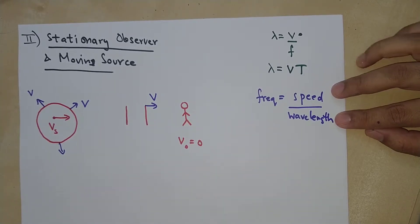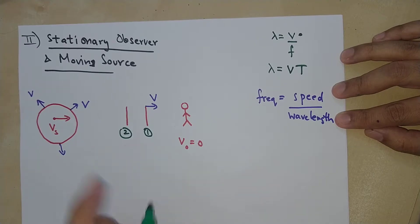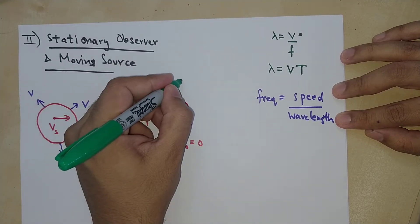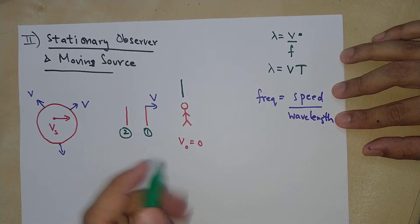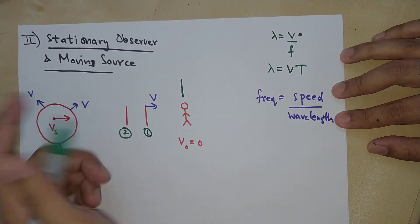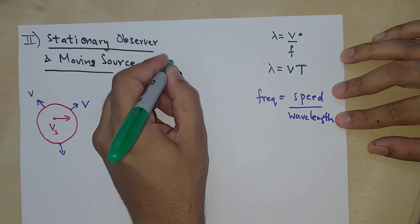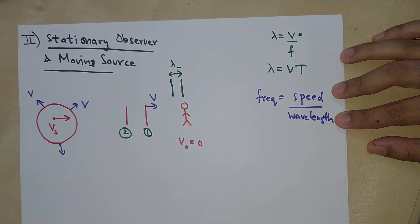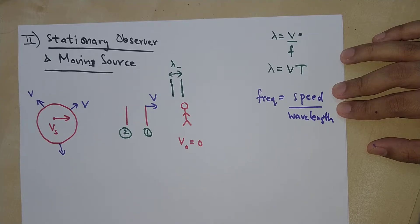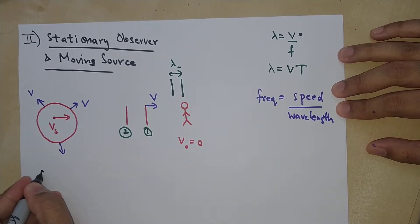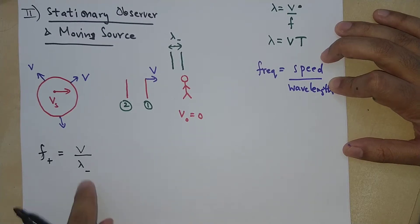To demonstrate that, let's label two crests as one and two. The first crest approaches the observer, but when the second crest approaches, the source has moved closer to the observer. So the second crest is going to be closer to the observer, and therefore the wavelength is going to be smaller. Because of this smaller wavelength, the frequency will increase — frequency is greater, speed is the same, and wavelength is smaller.